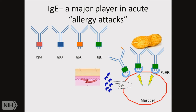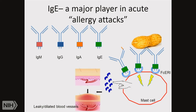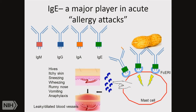When histamine acts on your blood vessels, it causes the area to become swollen — the blood vessel becomes leaky and dilates, so fluid rushes out. That's where the redness and swelling come from. Other mediators act on nerves right there, causing you to itch and scratch. Depending on where this is, you can get hives in the skin, sneezing if it's in your nose, wheezing if it's in your lungs, or vomiting if it's in your belly. If all your blood vessels are dilating and becoming leaky simultaneously throughout your body, your body cannot keep the pressure up — that's anaphylaxis.